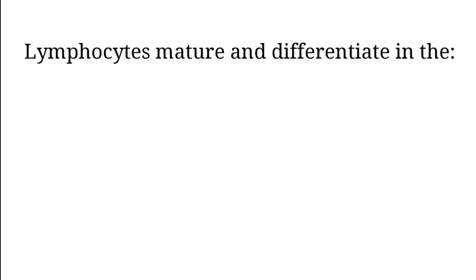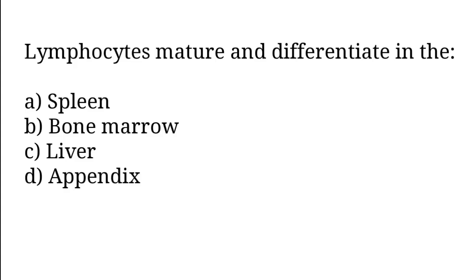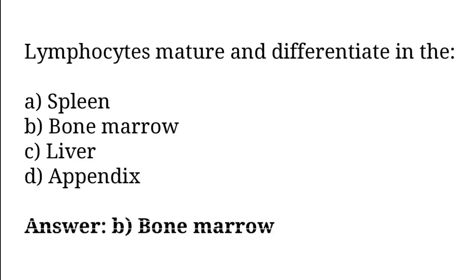Lymphocytes mature and differentiate in: A) Spleen, B) Bone Marrow, C) Appendix. The correct answer is option B — Lymphocytes mature and differentiate in the Bone Marrow.